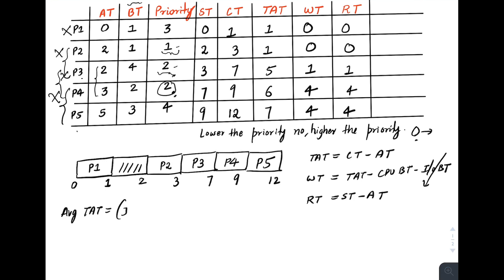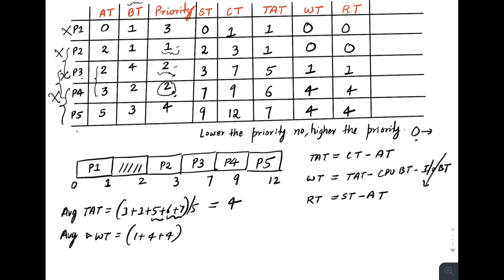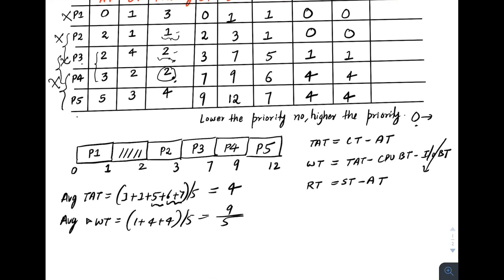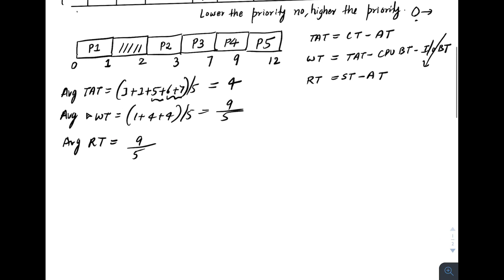Average turnaround time equals (1 + 1 + 5 + 6 + 7) divided by 5, which is 20 divided by 5 equals 4. Average waiting time equals (0 + 0 + 1 + 4 + 4) divided by 5, which is 9 divided by 5. Average response time is also 9 divided by 5, since the response times are the same as the waiting times in this case.